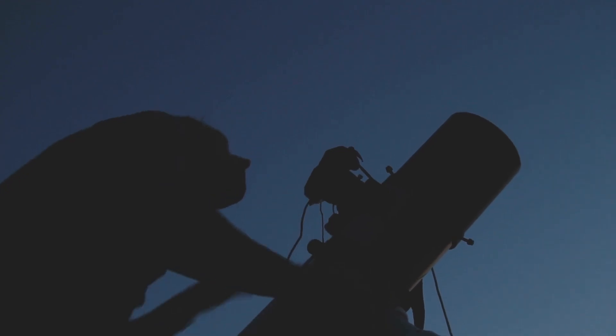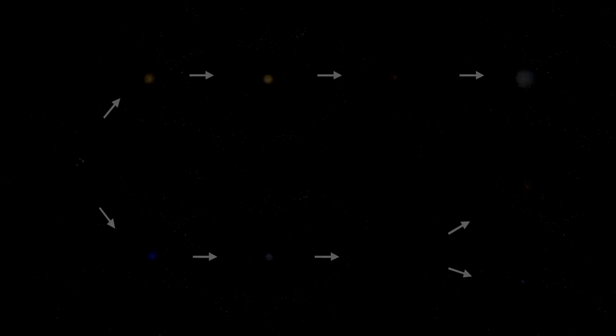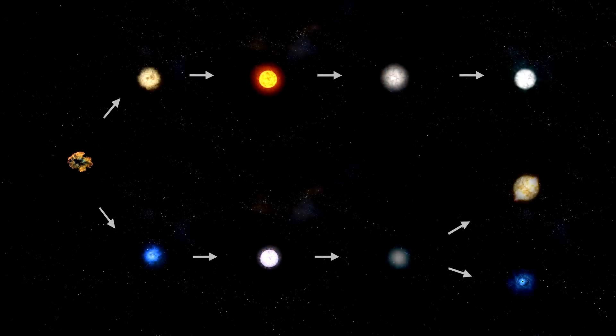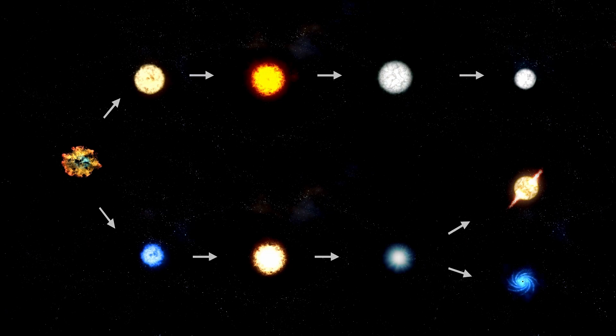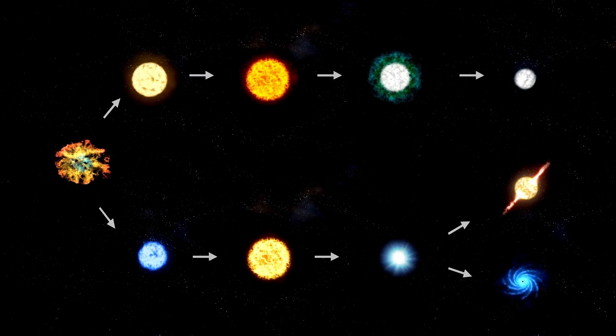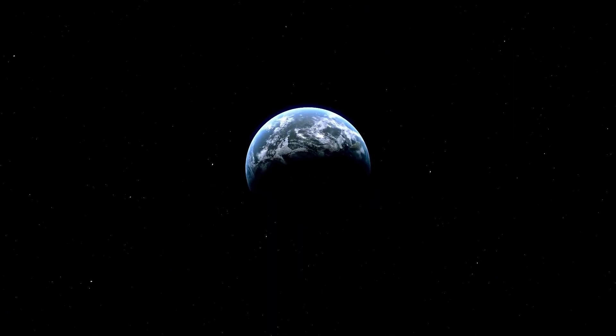With its Earth-like qualities, Proxima b is emerging as one of the most exciting possibilities in the search for life beyond our planet. Is there another planet that's very close to Earth, kind of like us, where there could be a civilization?